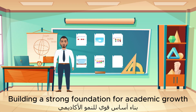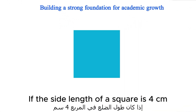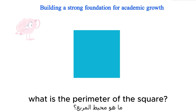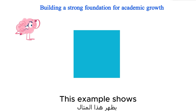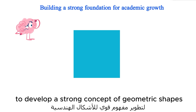Building a strong foundation for academic growth — Example: If the side length of a square is 4 cm, what is the perimeter of the square? This example shows the use of mathematics in area and perimeter calculations to develop a strong concept of geometric shapes.